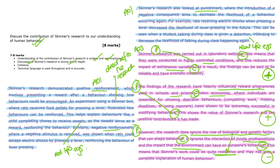Remember, in questions like this there is not a need for an equal evaluation — there doesn't need to be an equal amount of strengths and limitations; both just need to be included. The use of technical language throughout the response, such as positive and negative reinforcement and extraneous variables, really enhances the precision and depth of the response. These terms are essential for accurately conveying Skinner's research concepts and their implications, so they really do add to the quality of the response. Overall, the answer provides a comprehensive discussion of Skinner's research contributions, combining detailed descriptions of his findings with a really structured evaluation, and technical language is used throughout.